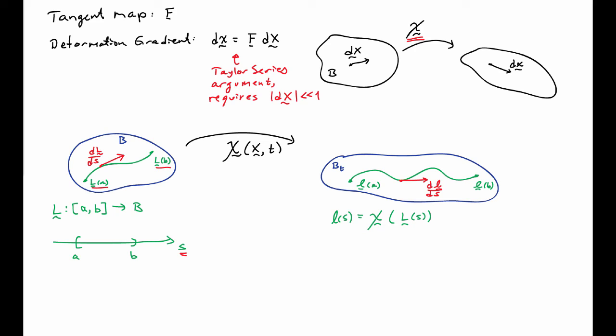These two tangent vectors are related to each other. It's easy to show this by taking the derivative of this expression with respect to S. Taking the derivative on the left side, I get the tangent vector in the current configuration.